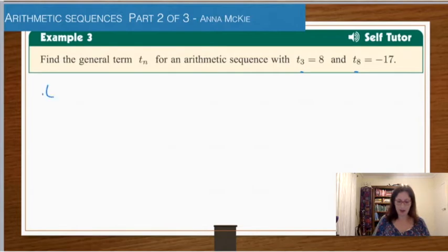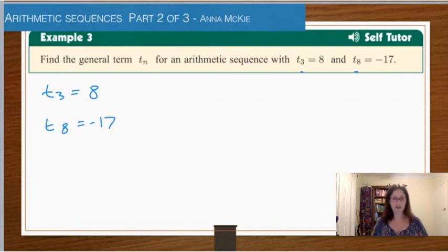We know that t3 is equal to 8, and that t8 is equal to negative 17. Now let's use the general form for an arithmetic sequence. We have tn is equal to the first term adding on n minus 1 times by the difference.